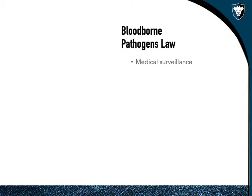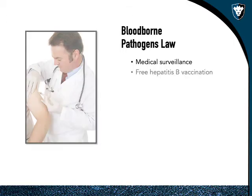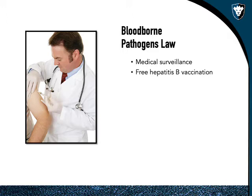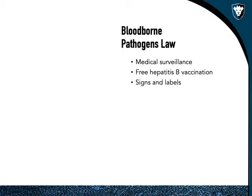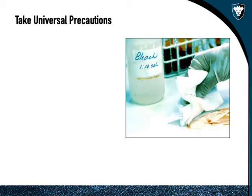The bloodborne pathogens law requires a medical surveillance program so that anyone exposed gets tested right away. Hepatitis B vaccination is free to any worker in America, though it's most relevant for those consistently working around blood such as EMTs, doctors, and nurses. Signs, labels, and engineering practices are also key requirements.